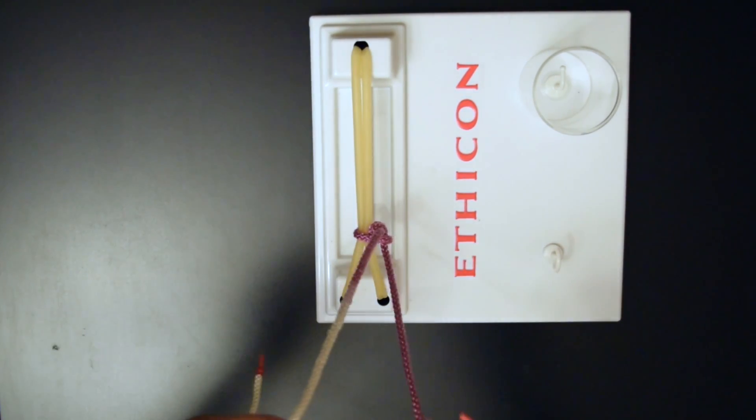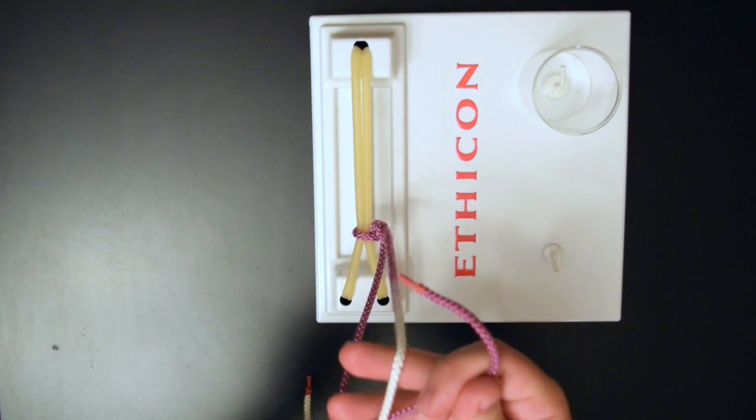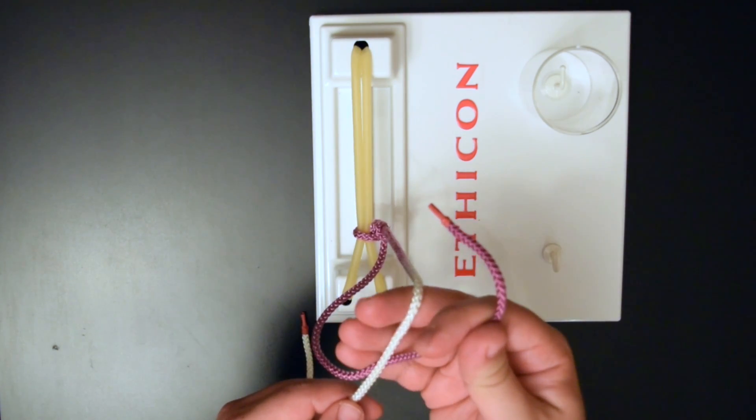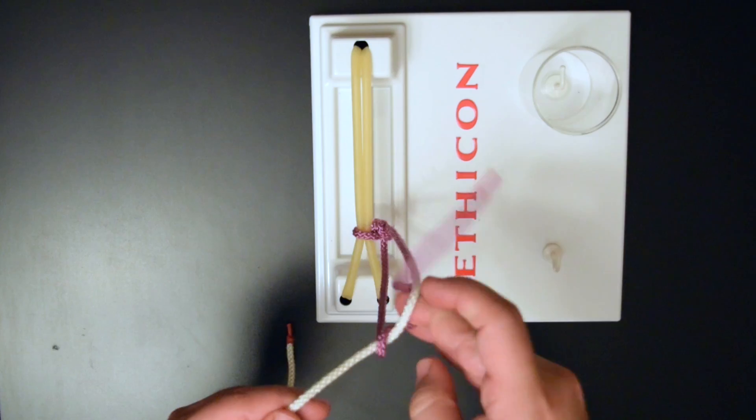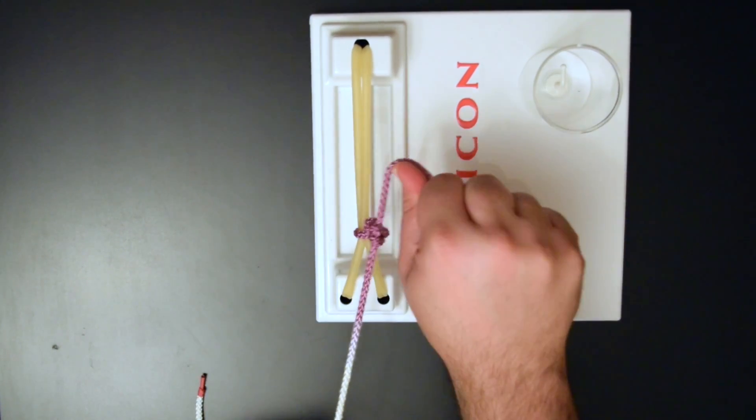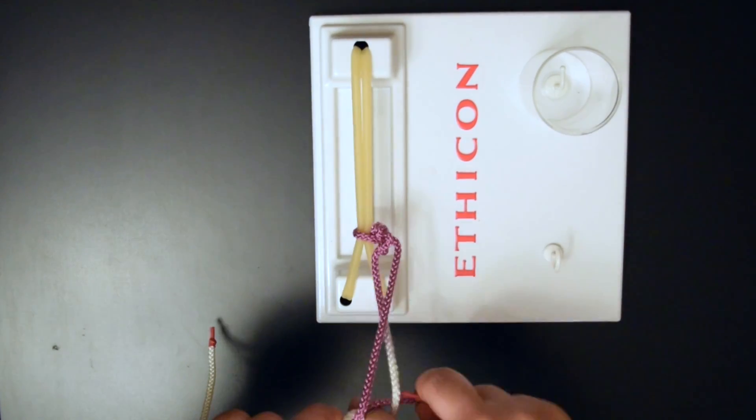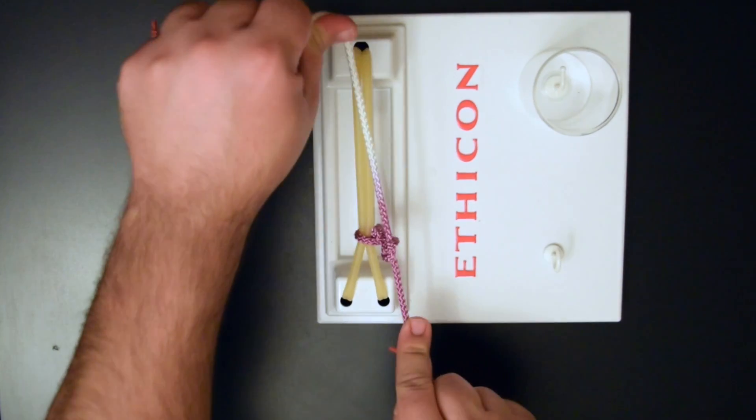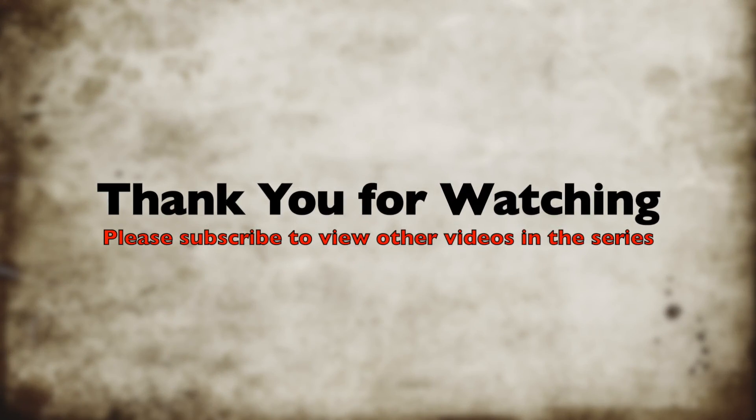And that'll give you your one-handed square, one-handed slip. And then throw a couple of sutures in the opposite direction to lock it in place.